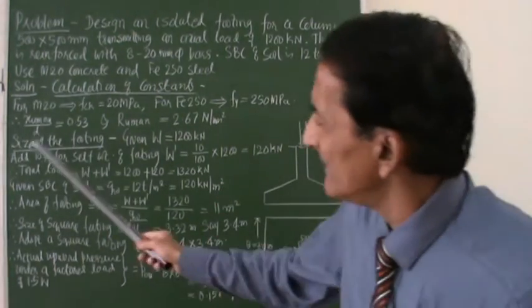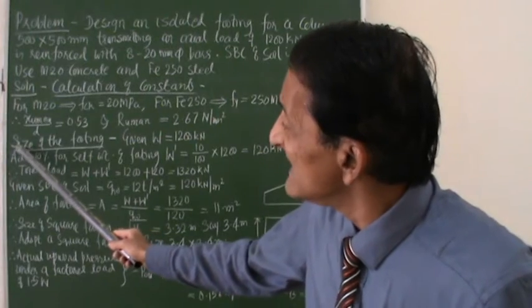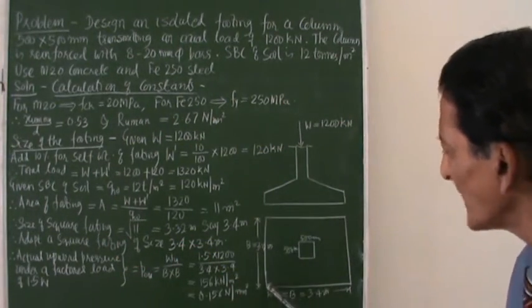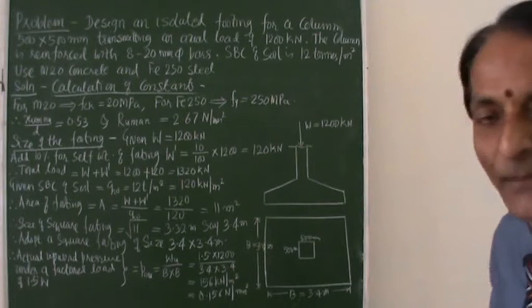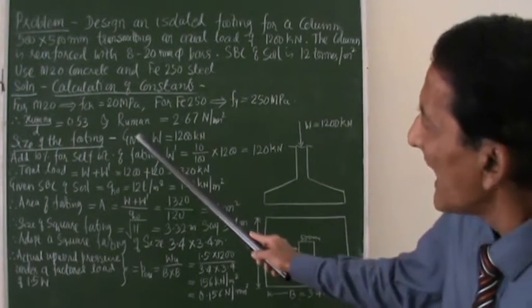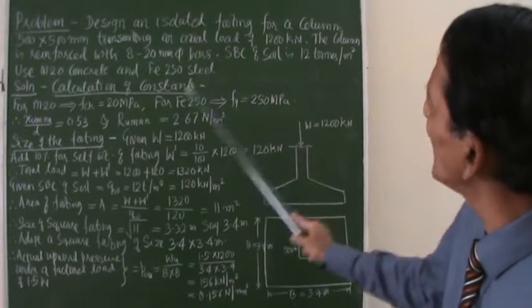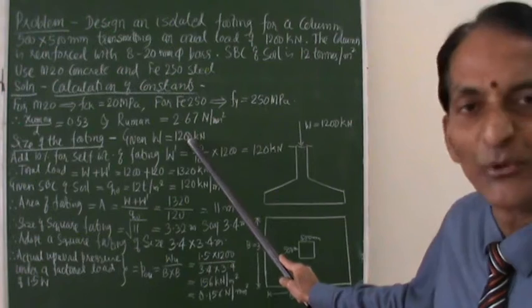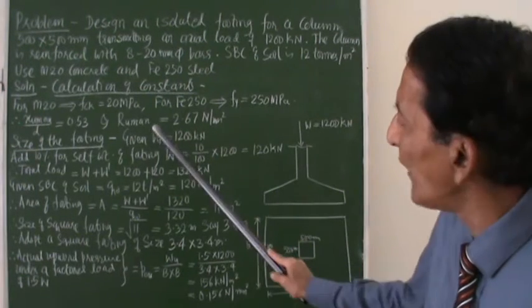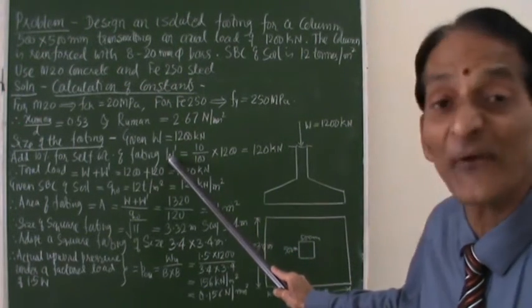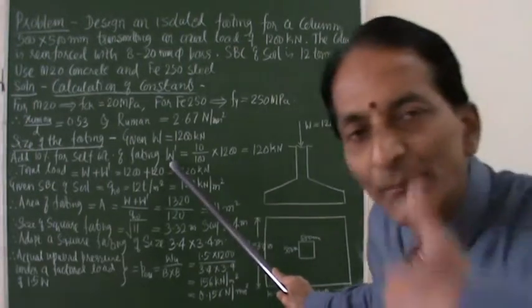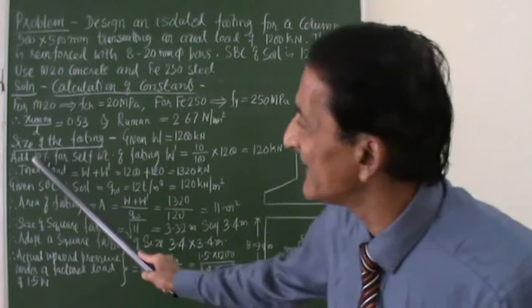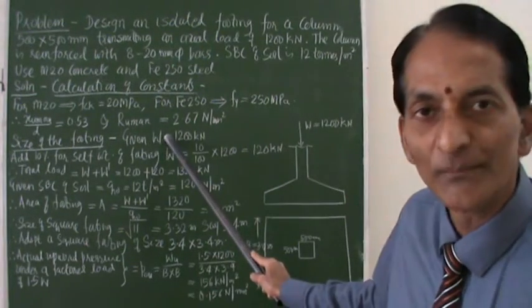The second step: I will fix up the size of the footing. I should know how much is this size, how much is this size. He has given here the total load acting on the column is 1200 kilonewton, so I will call it as W. To this W, I will add the self-weight of footing W', and we have seen self-weight of footing can be taken as 10% of W.